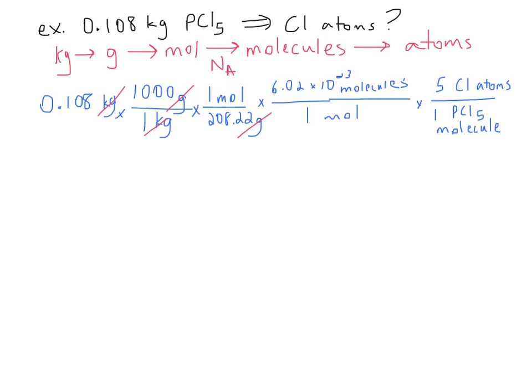Now in moles, put moles on the bottom and use Avogadro's number to convert from moles to molecules: 6.02 times 10 to the 23rd molecules per mole. Then put molecules on the bottom. In one PCl5 molecule, there are five Cl atoms, so put 5 on the top and one PCl5 molecule on the bottom.